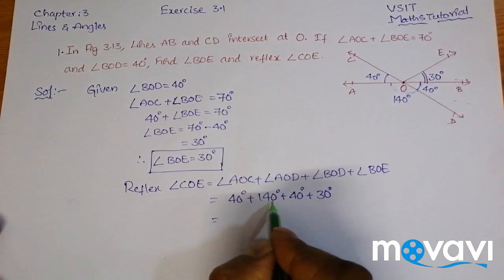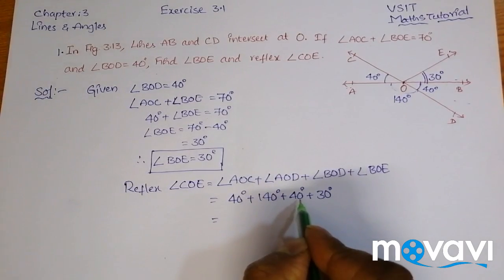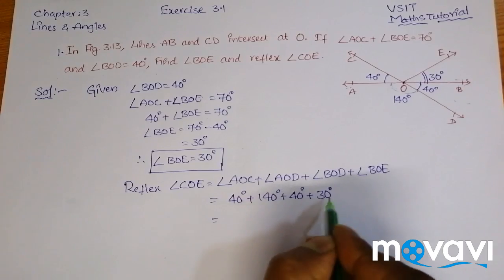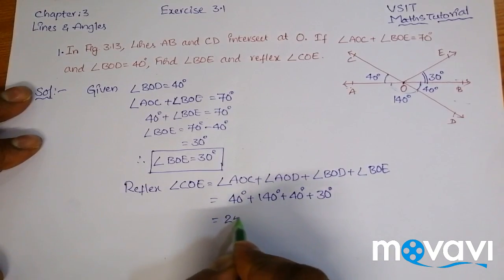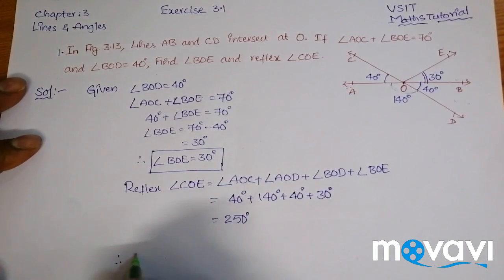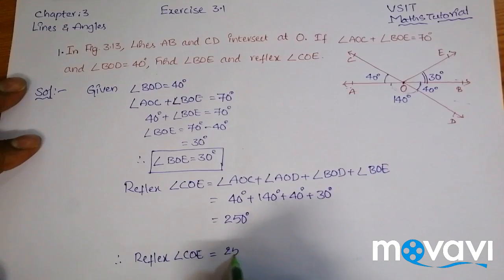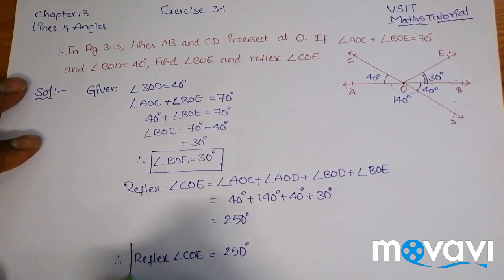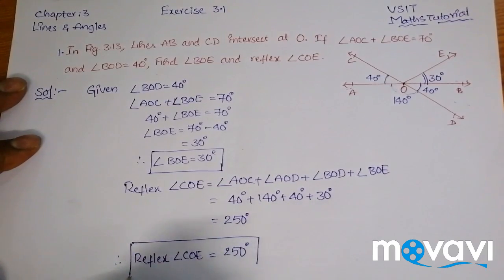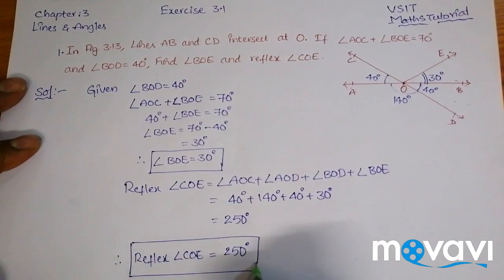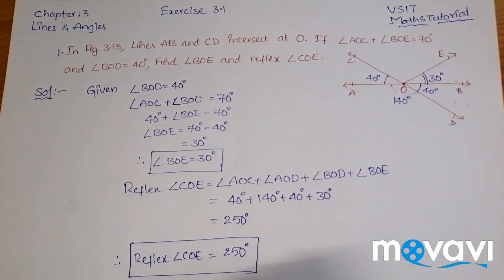Now, 40 plus 140 is 180, 180 plus 40 is 220, 220 plus 30 is 250 degrees. Therefore, reflex angle COE is equal to 250 degrees. This is the answer.